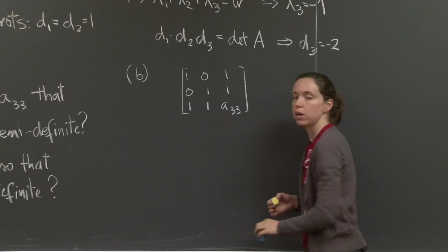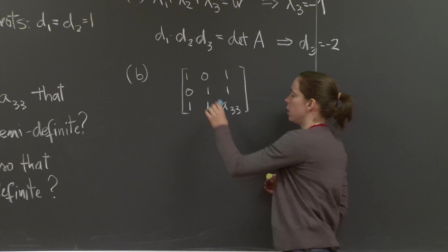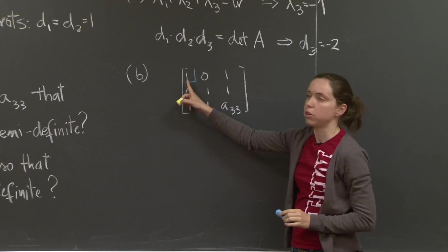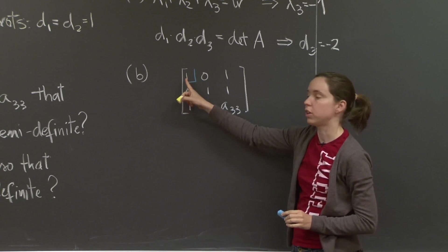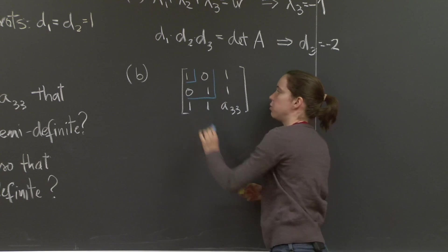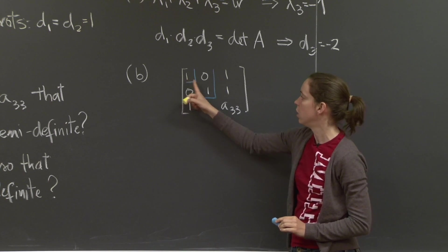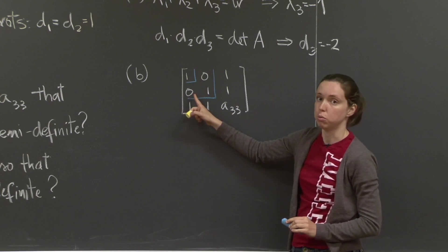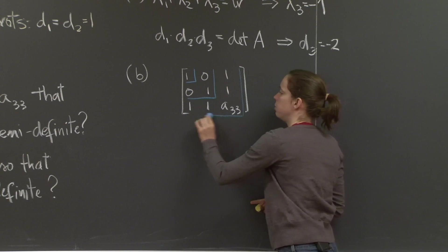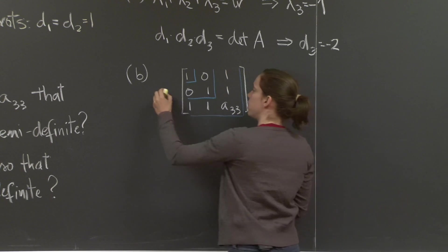Well, I was talking about the eigenvalues, but maybe the easiest way is to do the determinant test. The determinant of the small 1 by 1 left uppermost matrix is 1. The determinant of the 2 by 2 upper leftmost matrix is 1 times 1 minus 0 times 0, 1, also positive. So we need to check that the determinant of the whole matrix will also be non-negative.